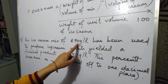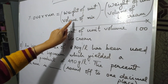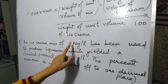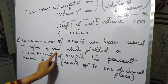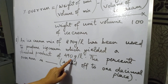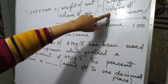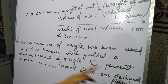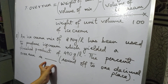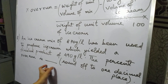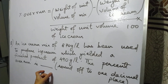Look at the question. It says an ice cream mix of 870 grams per liter. Referring to our formula, the weight of unit volume of mix is 870 grams. It has been used to prepare ice cream which yielded a finished product of 490 grams per liter — that means the final weight of the ice cream is 490 grams, which is the weight of unit volume of ice cream. The percent overrun is dash, meaning we have to calculate the answer — no options are provided, so this is a Numerical Answer Type question, NAT.